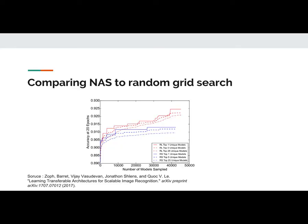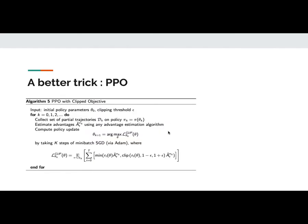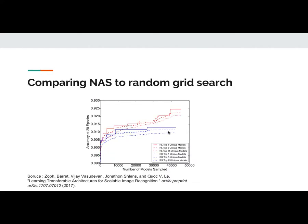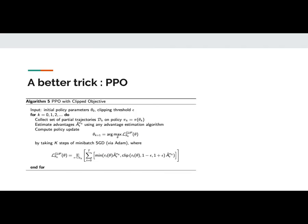In a 2017 paper called 'Learning Transferable Architectures for Scalable Image Recognition,' the same team compared NAS against random grid search. The blue line is random grid search and the red line is NAS — you can see NAS is doing something beyond random, though they didn't explore all possible alternatives like genetic algorithms. They compared against the most basic baseline of random search.